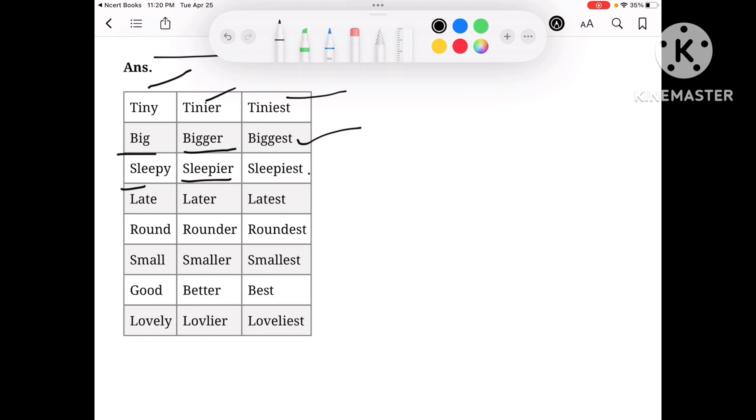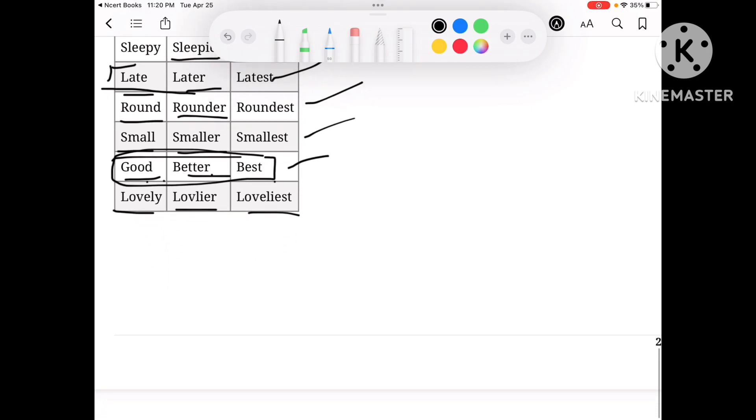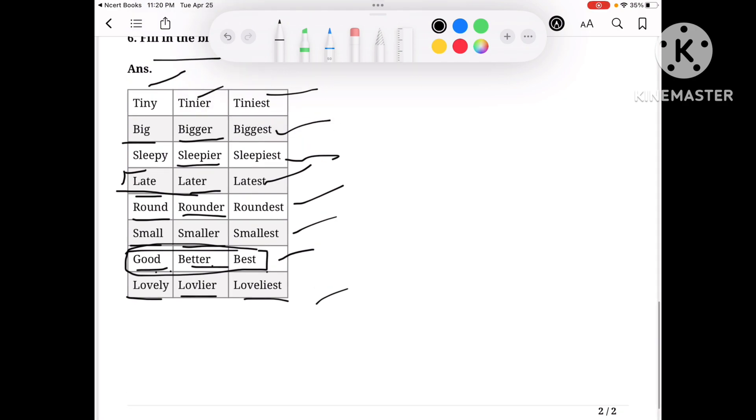Sleepy, Sleepier, Sleepiest. Late, Later, Latest. Round, Rounder, Roundest. Small, Smaller, Smallest. Good, Better, Best. Lovely, Lovelier, Loveliest.